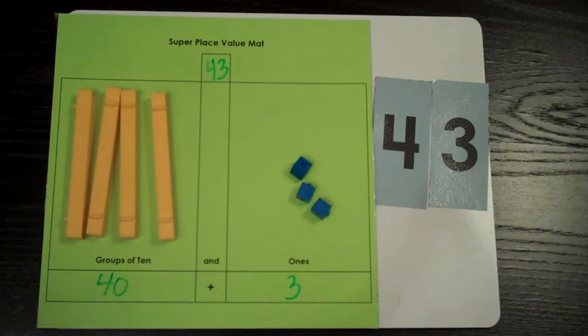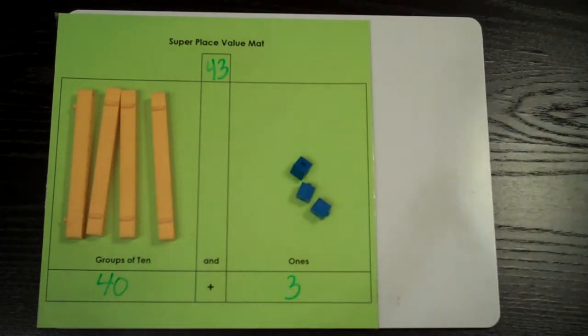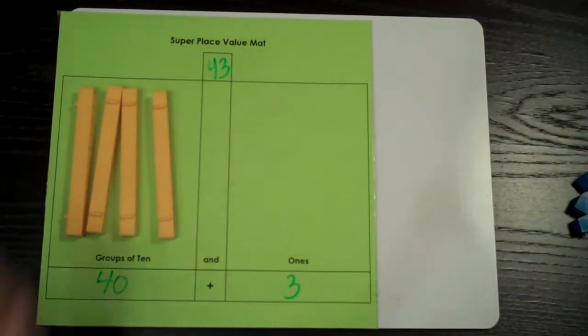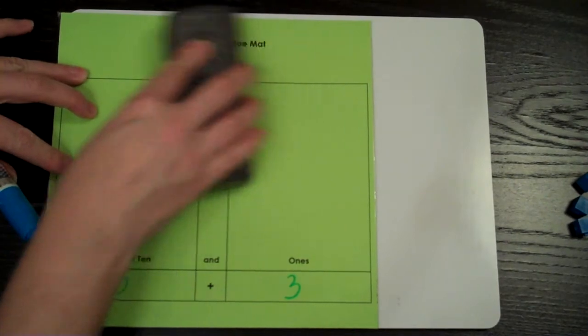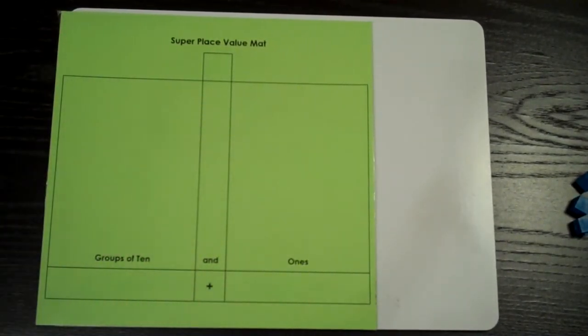We're going to try a challenge together to review this important rule. First, I need to clear my mat. Any time I start a new activity with base 10 materials, I need to clear everything off. I'm going to get rid of my ones, my tens, and my writing. Now I'm ready for the challenge.